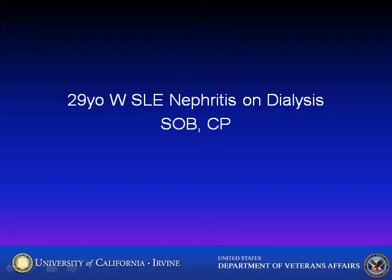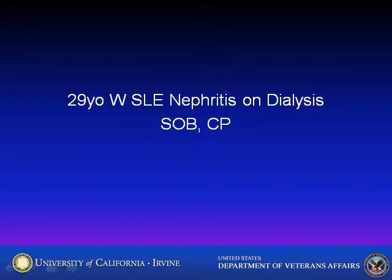This 29-year-old woman had systemic lupus erythematosus nephritis, renal failure, and progressive shortness of breath while on dialysis. She did have atypical chest pain as well. She was brought into the hospital on a physical examination. Blood pressure was 120/80, although the respiratory variation was large, as we'll see.